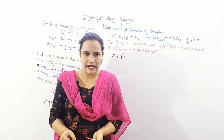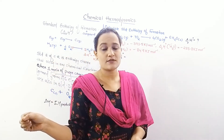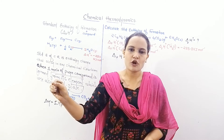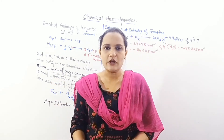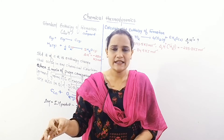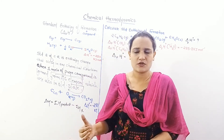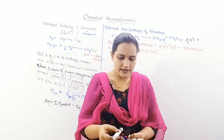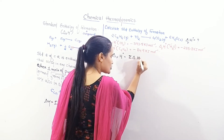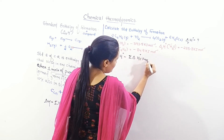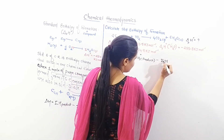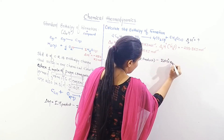We apply the formula: delta H naught = submission of delta H naught of products minus submission of delta H naught of reactants. If you haven't seen the previous lecture, watch that first so you understand where this formula comes from. So first we write down the submission of delta H naught of products, from which we subtract the submission of delta H naught of reactants.